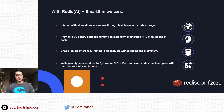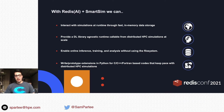Lastly, we can write and prototype extensions in Python for C, C++, and Fortran-based codes that keep pace with distributed simulations using Fortran with MPI. You can prototype these extensions in Python where it's quick and easy — write a little TorchScript to do some filtering or value augmentation for part of your simulation, host it in the Redis AI deployment, and call it from your simulation with just a few calls.